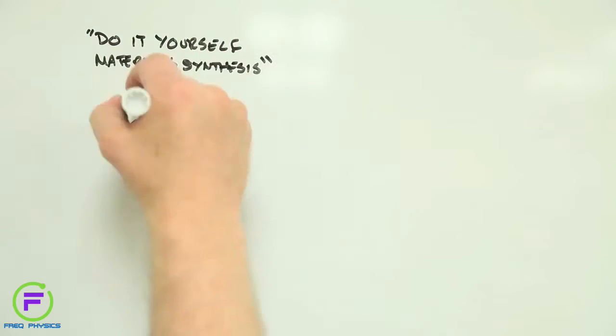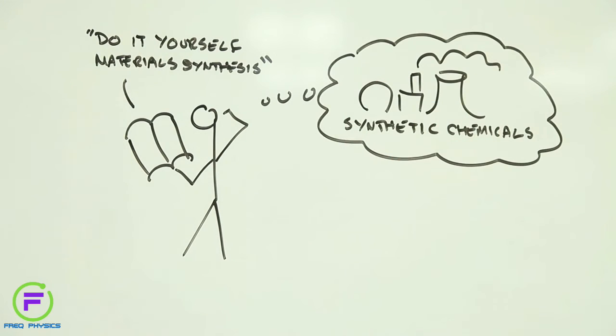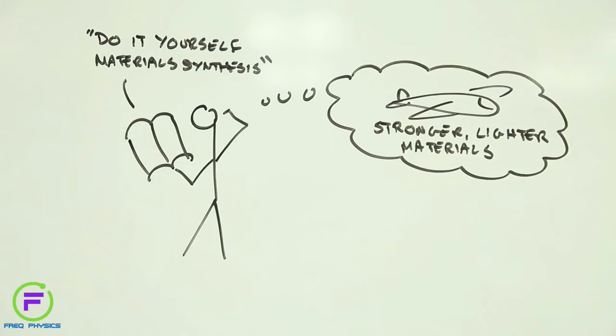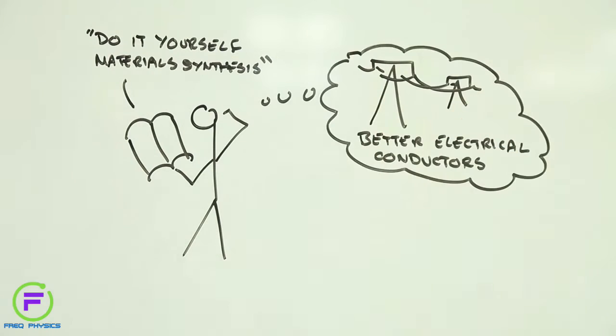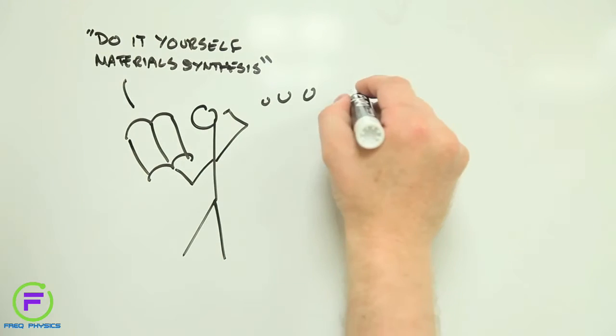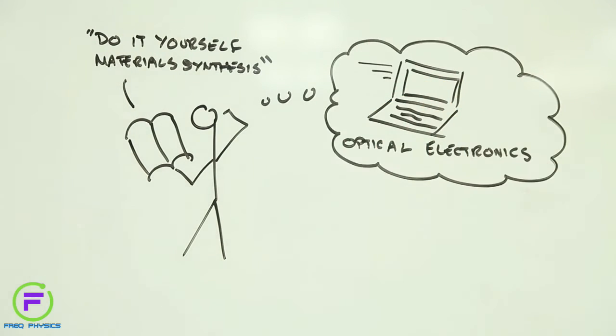Once scientists and engineers had discovered the atomic rules of material construction they set about designing new materials. Using newly developed synthesis and construction techniques they started to make designer chemicals and they quickly moved on to more complex materials. Materials that were stronger and lighter, that conducted electricity and heat better, that transmitted or blocked light and other forms of radiation more effectively, and did other things that had previously been out of reach.